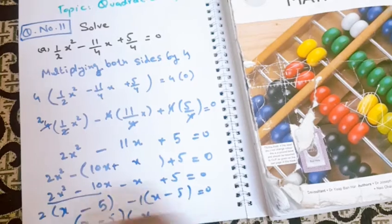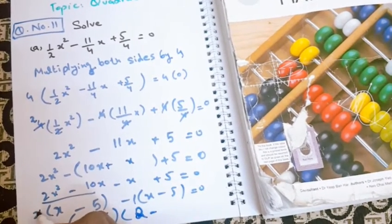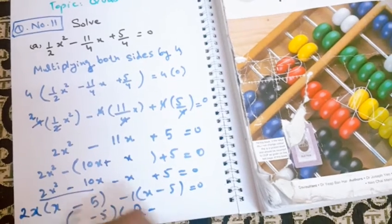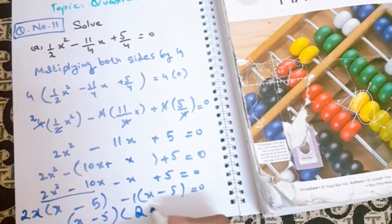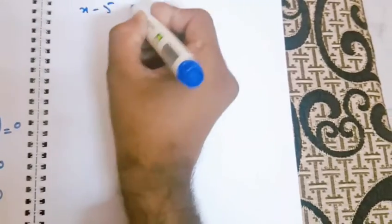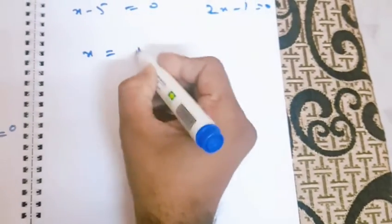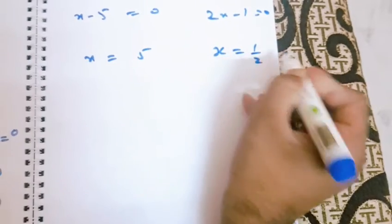When x minus 5 is on both sides, we can take it common. 2x was common, so 2x minus 1 is here. x minus 5 equals 0, 2x minus 1 equals 0. Therefore x equals 5 and x equals 1 over 2. Okay, Allah Hafiz.